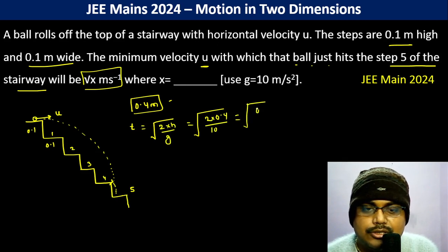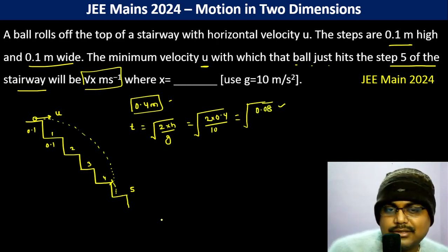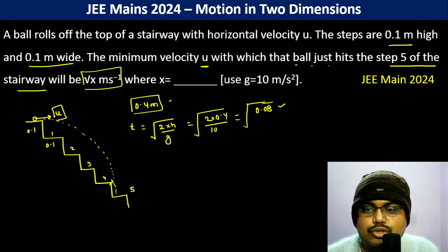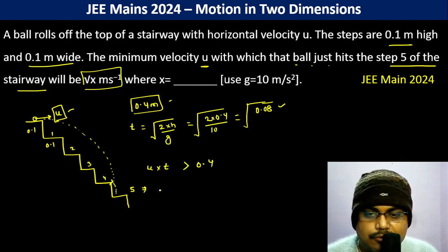Now in this time, u should be such that u into t should be greater than 0.4. Therefore, u into root over 8 by 100 should be greater than 4 by 10.